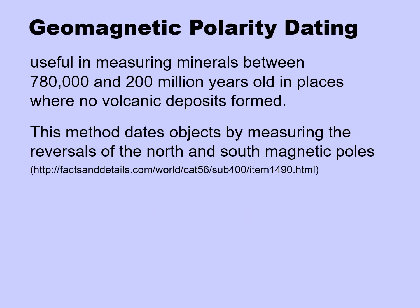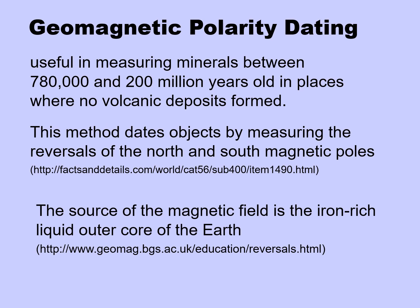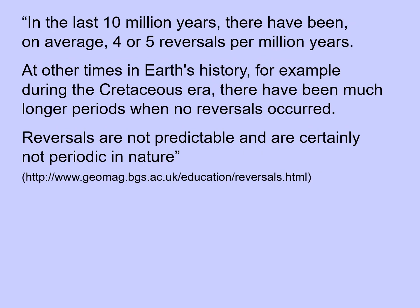Geomagnetic polarity dating is useful in measuring minerals between 780,000 and 200 million years old in places where you don't have volcanic eruptions. This method dates objects by measuring the reversals of the north and south magnetic poles — through time the north pole has moved to the south and the south pole has moved to the north. The source of the magnetic field is the iron-rich liquid outer core of the earth. In the last 10 million years or so, there have been on average four or five reversals per million years. But at other times — for example, during the Cretaceous era — there were much longer periods when no reversals occurred. So reversals are not predictable and are certainly not periodic in nature.